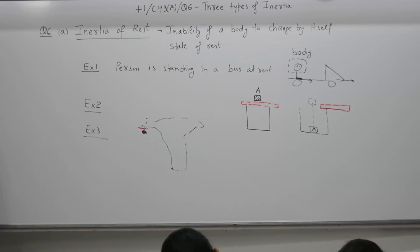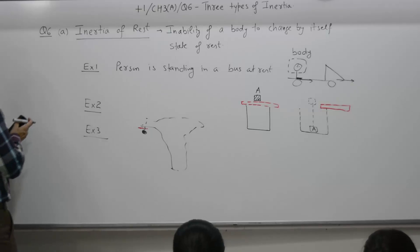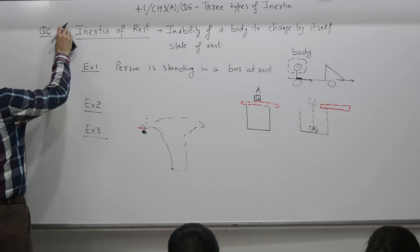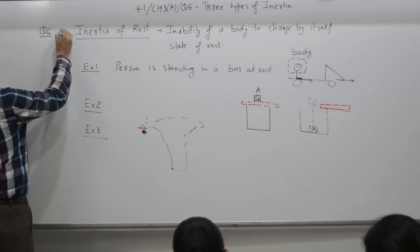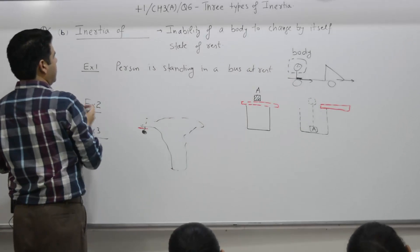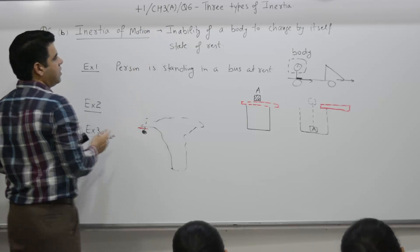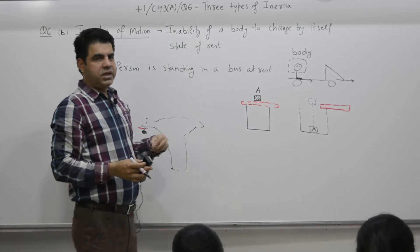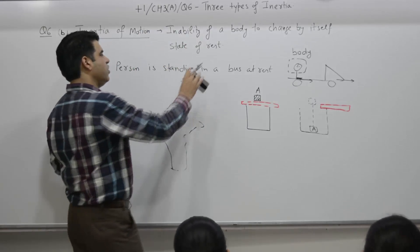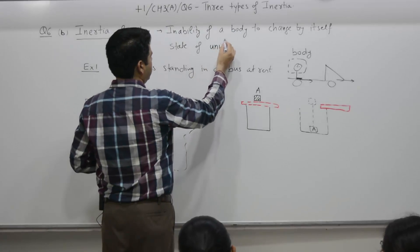The next part is inertia of motion. It is the inability of a body to change by itself its state of motion — that is, uniform motion.